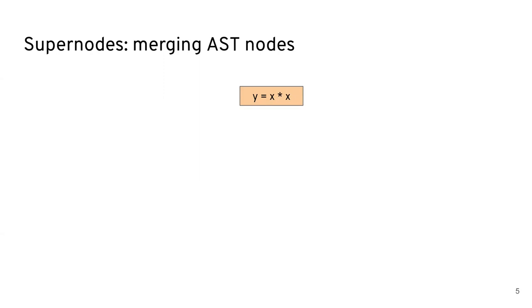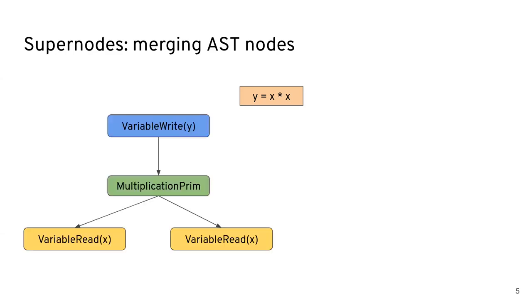So if you have this instruction, which is a local variable y being assigned the value of x squared, it's going to look like something like this in the AST. So a variable write node that's going to write the variable y, and the value that's going to be assigned to it is the multiplication through a multiplication primitive of two variable reads of x.